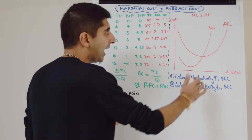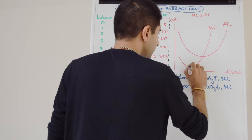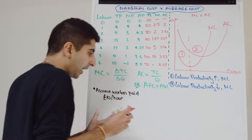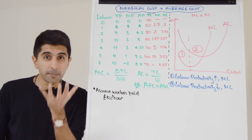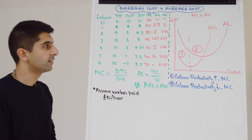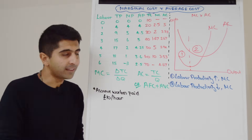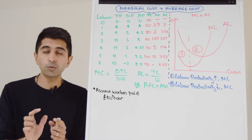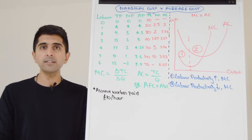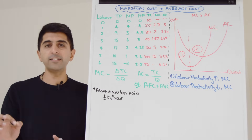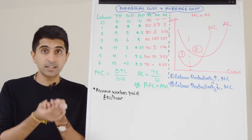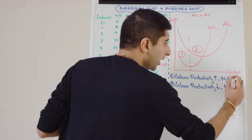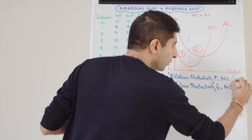We can illustrate this carefully by breaking up the marginal cost curve into two parts — part 1 and part 2. In stage 1, there is increasing labour productivity and increasing marginal product. The reasons for this include specialization between workers and underutilization of fixed factors of production. As a result, labour productivity increases, marginal product increases, and we can see that marginal cost will decrease in this case.